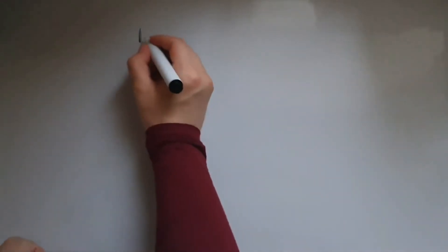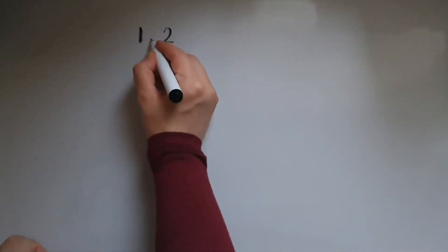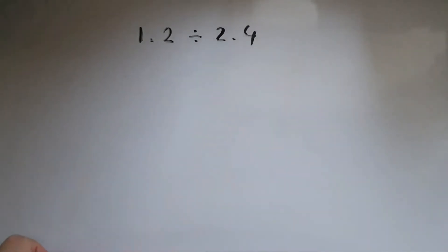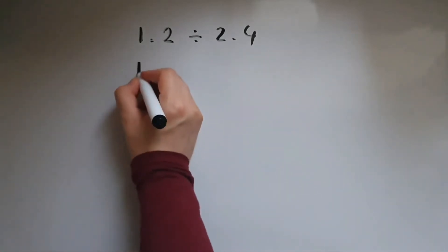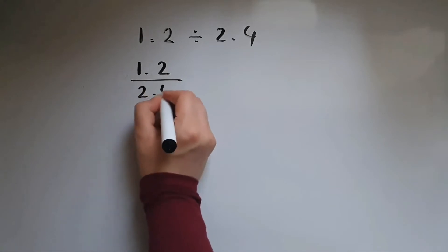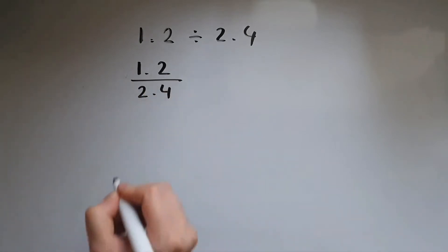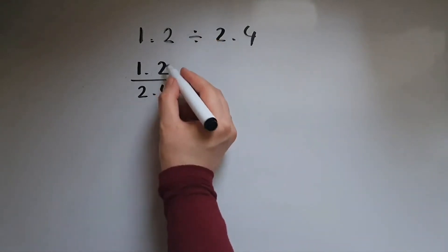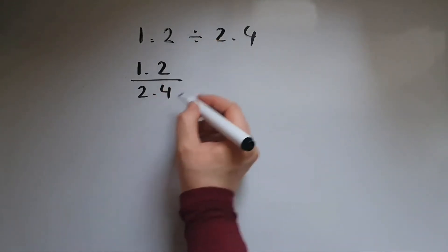In this video we'll learn about dividing decimals. We've got 1.2 divided by 2.4. The first thing to do is to turn it into a fraction, so it means the same as 1.2 over 2.4, because that division symbol is the same as a fraction.